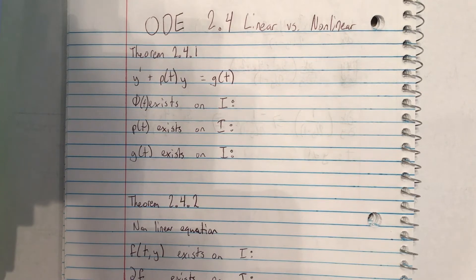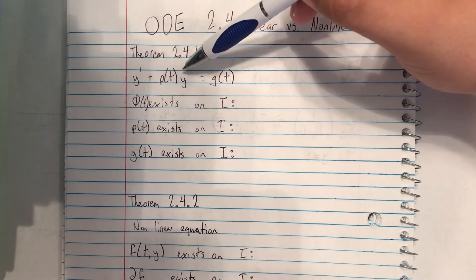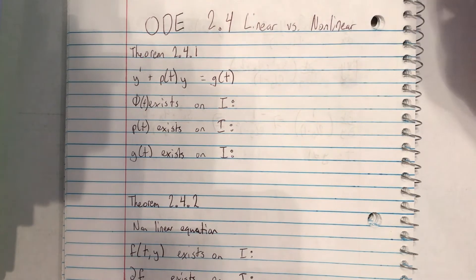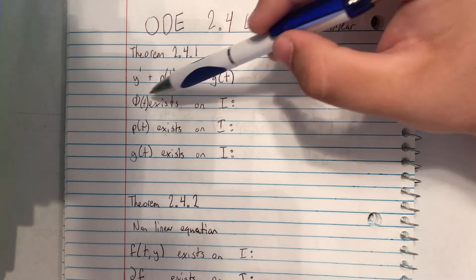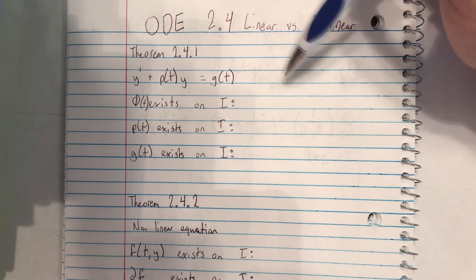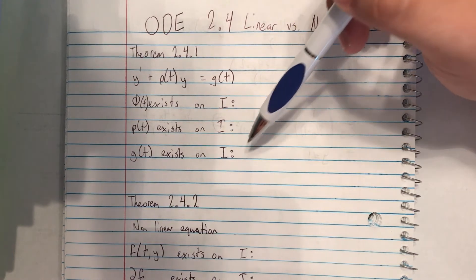Starting off with 2.4.1, we have the general function form y' + p(t)y = g(t). We can say that a solution exists on the interval I, and this is dependent on both p(t) and g(t).